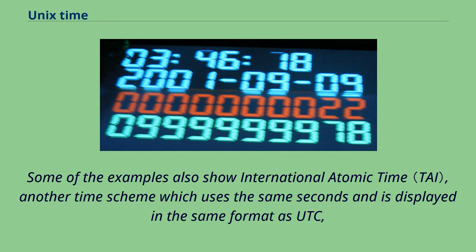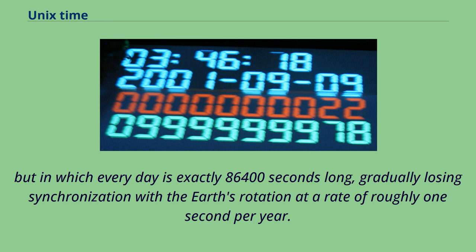Some examples also show International Atomic Time, another time scheme which uses the same seconds and is displayed in the same format as UTC, but in which every day is exactly 86,400 seconds long, gradually losing synchronization with the Earth's rotation at a rate of roughly one second per year.